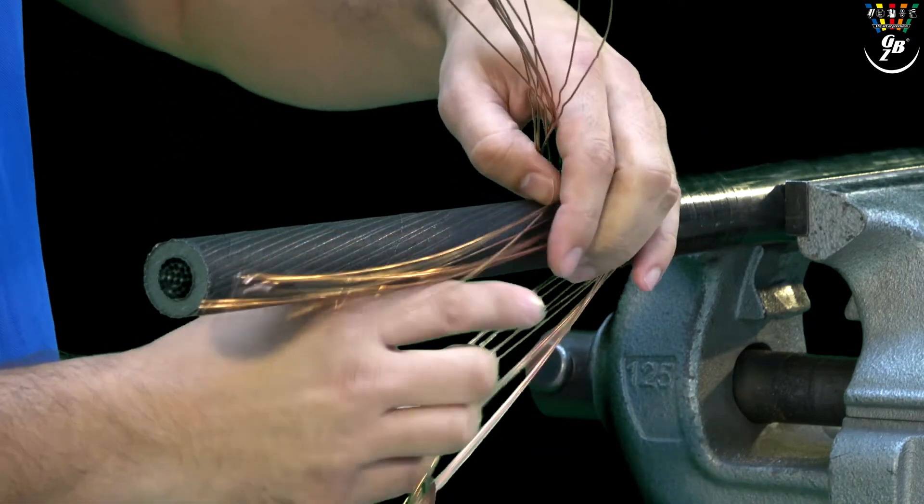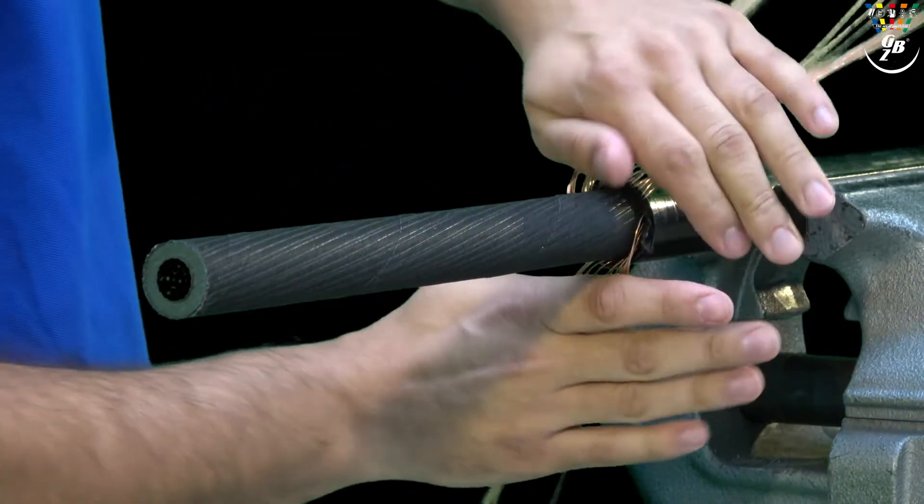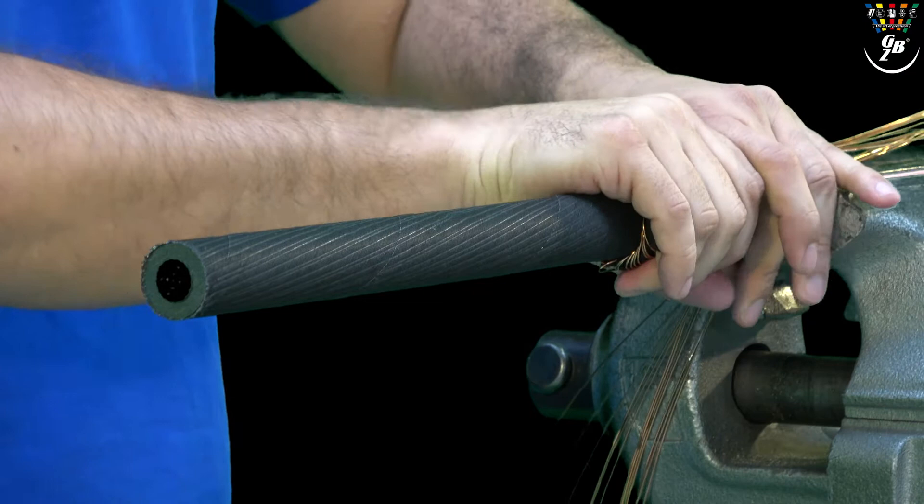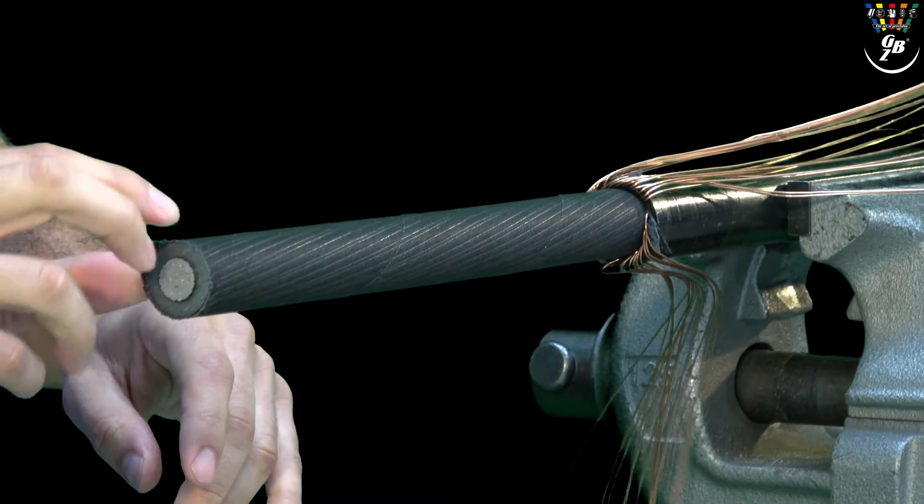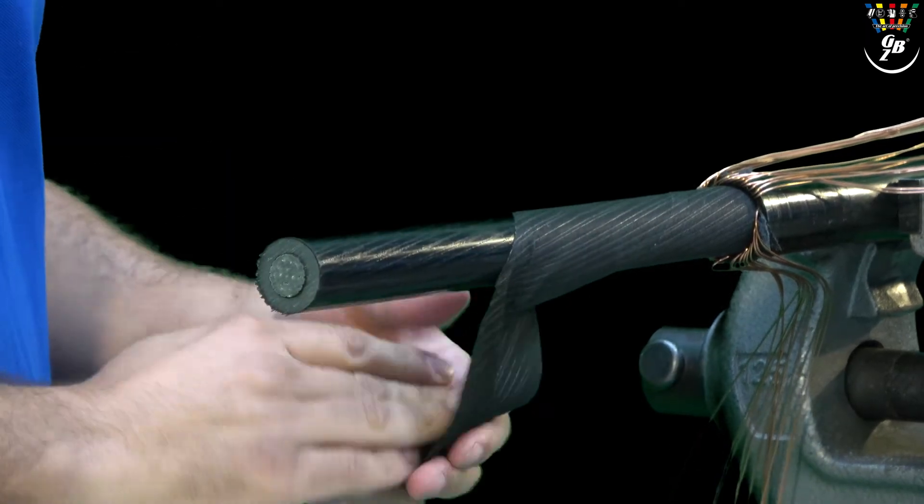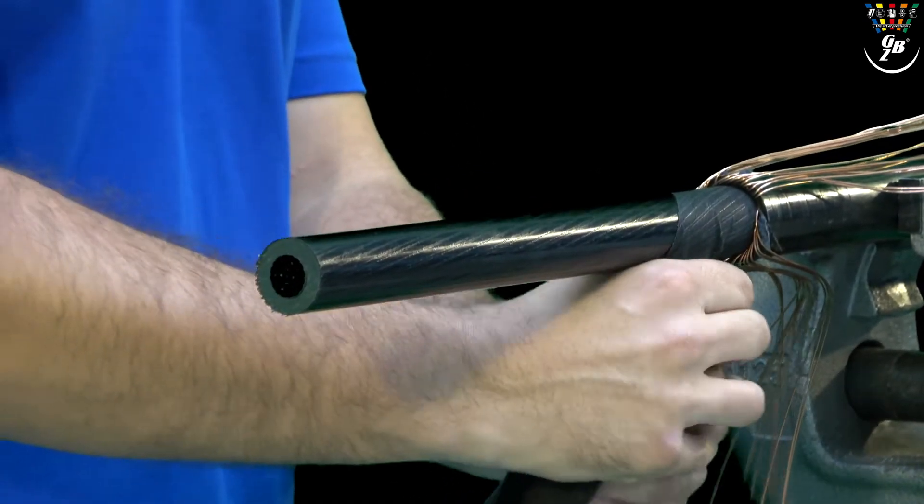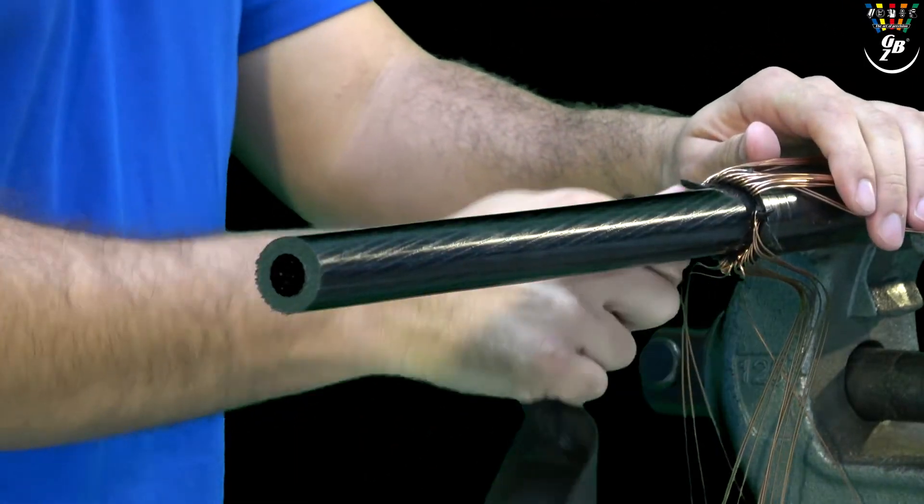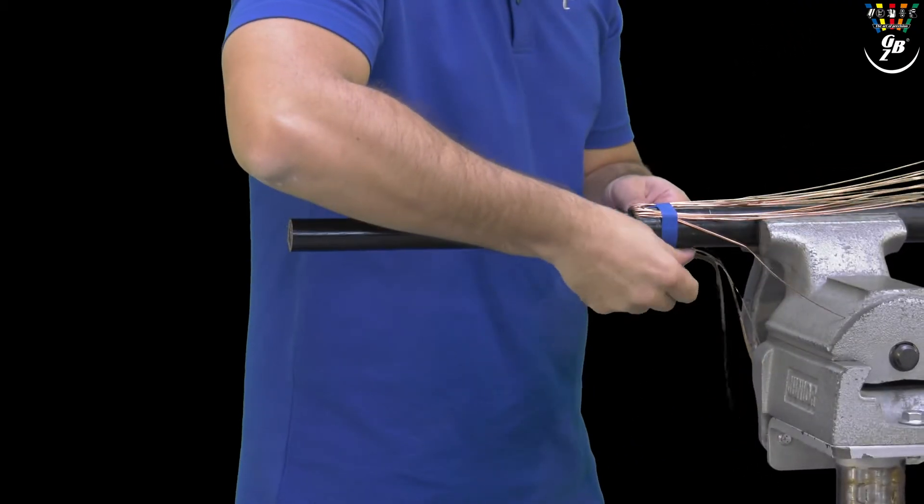Then we bend the shielding wires backwards, remove the fleece, and fix the shielding wires with tape.